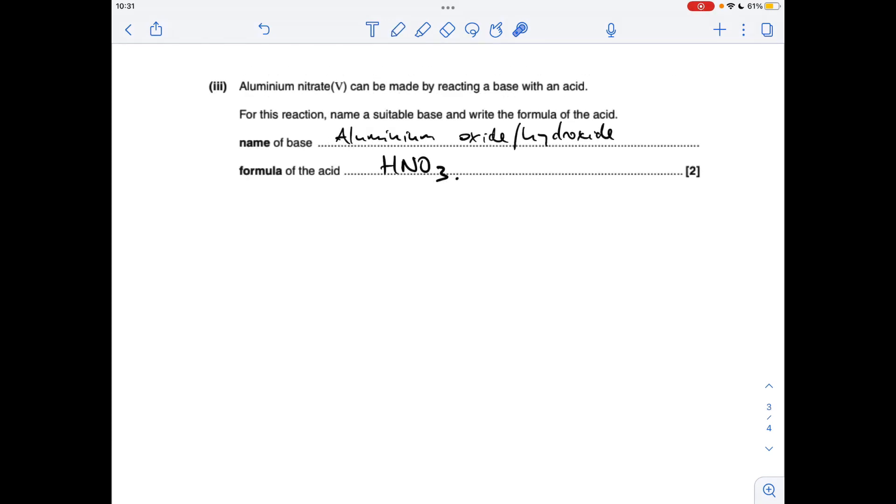And the final part of the question, so the name of the base that you could make aluminium nitrate(V) from, so it's either aluminium oxide or aluminium hydroxide, and the acid to generate a nitrate(V) salt will be nitric acid.